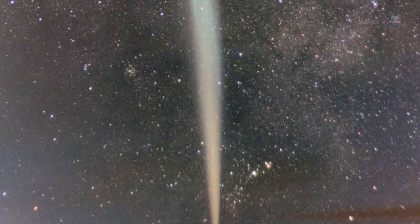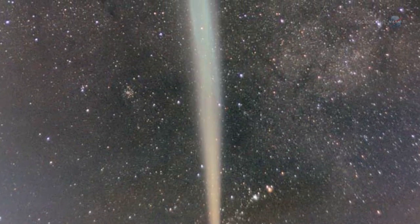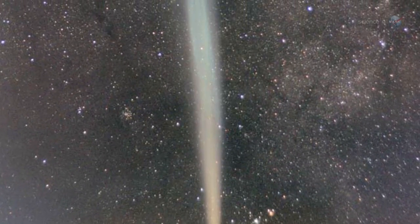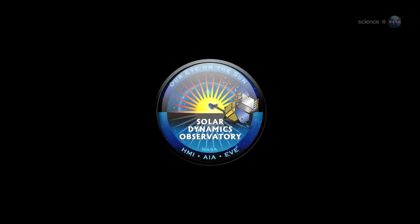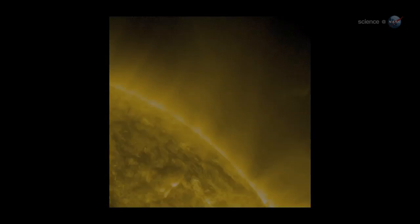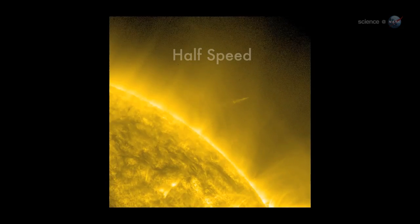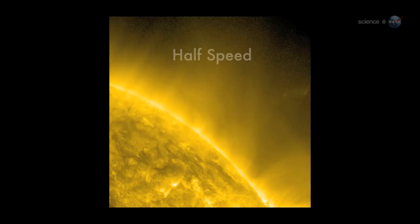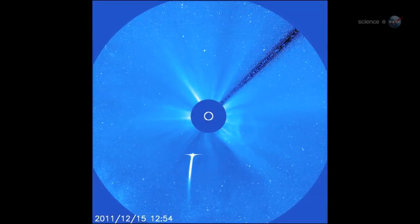When December 16th came, however, Comet Lovejoy shocked us all, says Battams. It survived, and even flourished. Images from NASA's Solar Dynamics Observatory showed the comet vaporizing furiously as it entered the Sun's atmosphere, apparently on the verge of obliteration. Yet Comet Lovejoy was still intact when it emerged on the other side. The comet had lost its tail during the fiery transit. A temporary setback.